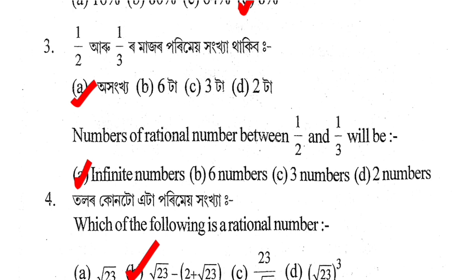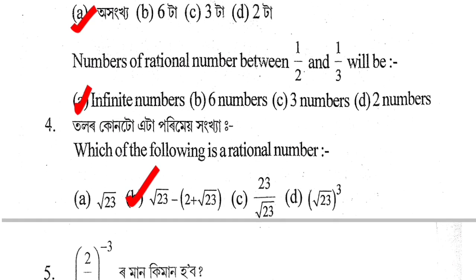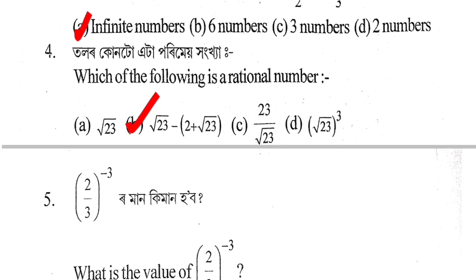Question 3: The correct answer is Option A. Next question: Which of the following is a rational number? Option B is the correct answer.